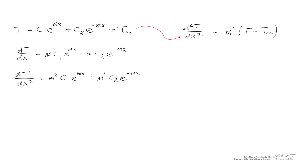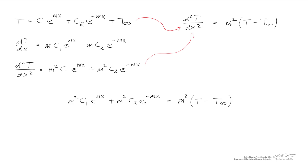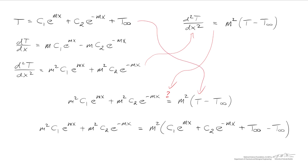If you're curious why this expression is a solution to the differential equation, we first differentiate it twice to get two expressions, then plug into the left-hand side. We then take our expression for temperature and plug it into the right-hand side. We find that the ambient temperature T_infinity cancels out, and we confirm that the expression is indeed the solution.